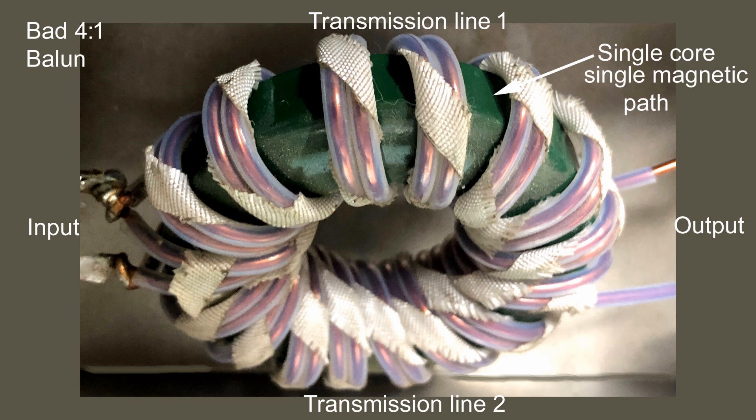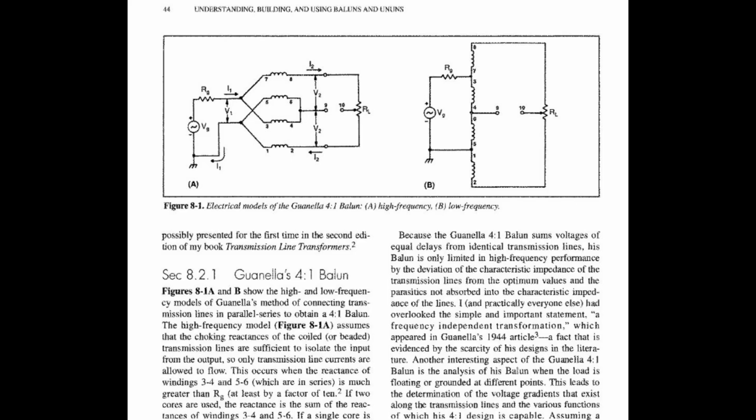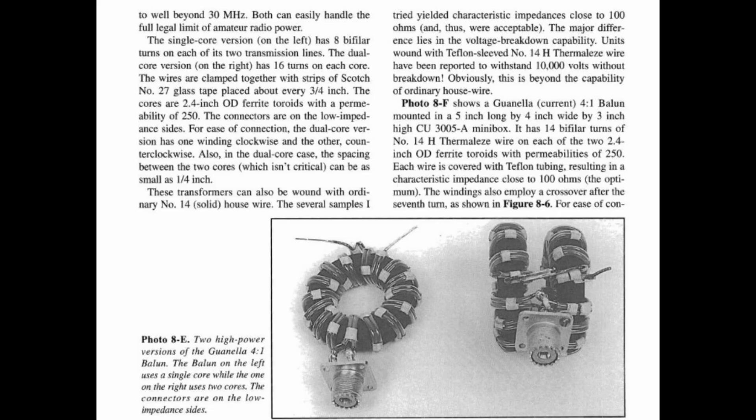So the natural question after all of this is how did baluns that aren't baluns get out in the field and why are they still being sold? And the answer to this is quite simple. In the original articles if you go back and you look at all the original articles where this flawed idea came up that you can put two transmission lines on a single core and make a four to one current balun by doing that, if you go back to all of the original articles and look at them, there isn't any place in any of it where anybody tested any of the baluns for the single most important thing we want in a balun. Nobody checked them for balance.